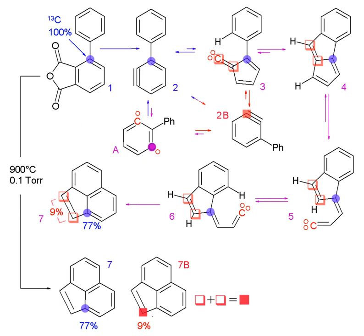The ocean is an extensive network of particle transport. Thorium isotopes can help researchers decipher the vertical and horizontal movement of matter. 234Th has a constant, well-defined production rate in the ocean and a half-life of 24 days. This naturally occurring isotope has been shown to vary linearly with depth, so any changes in this linear pattern can be attributed to the transport of 234Th on particles.